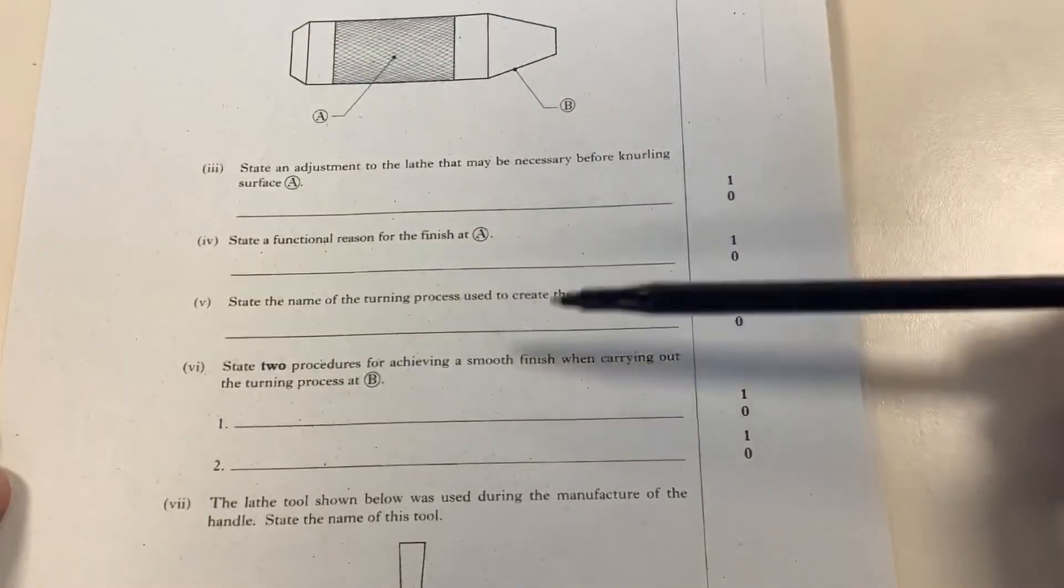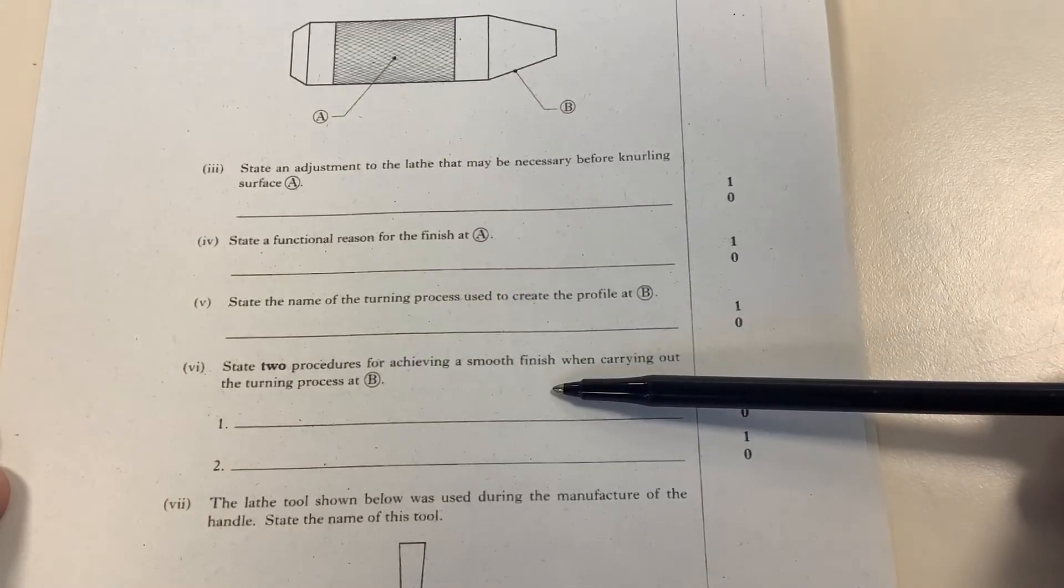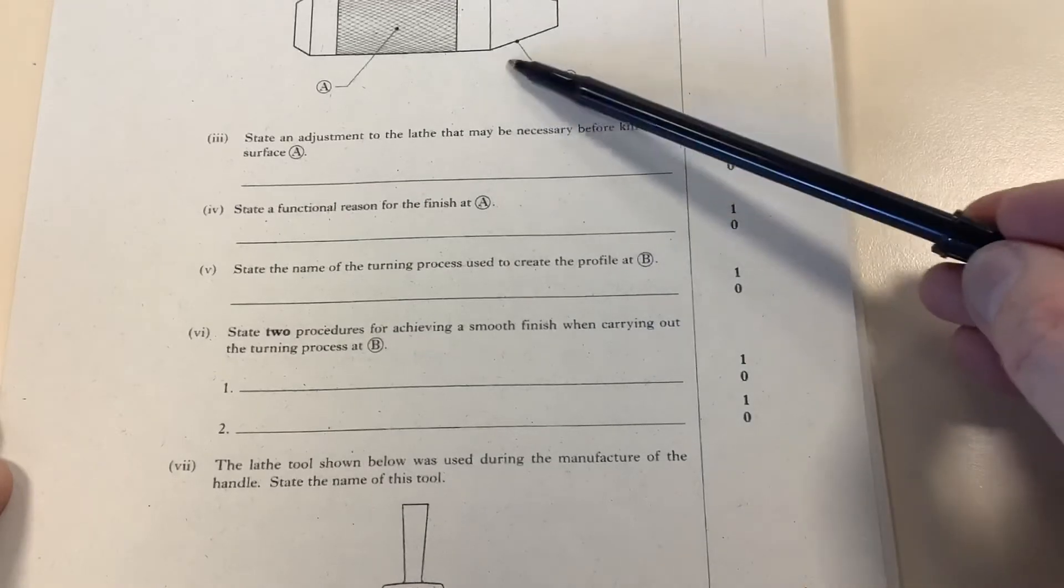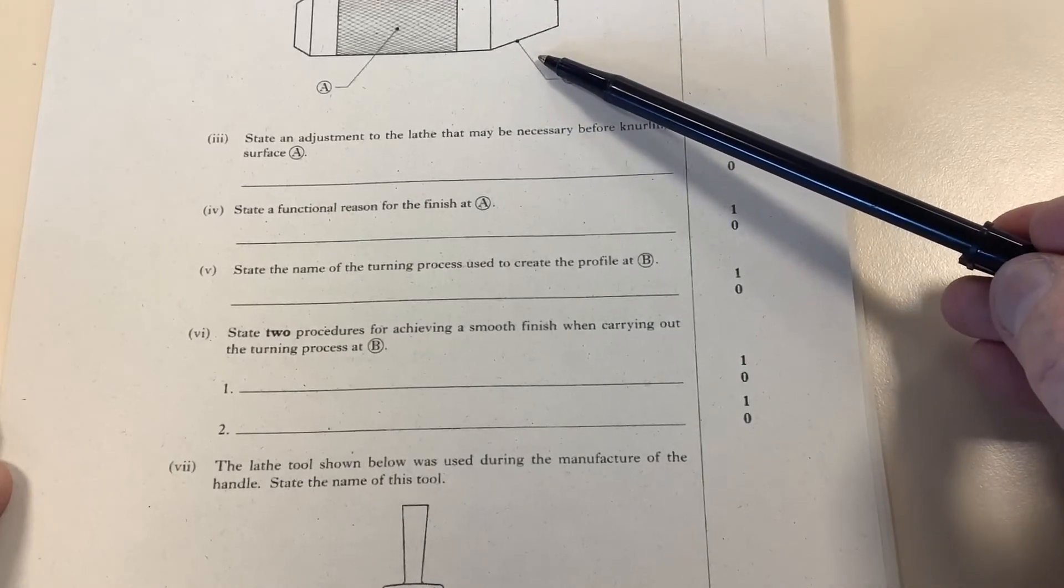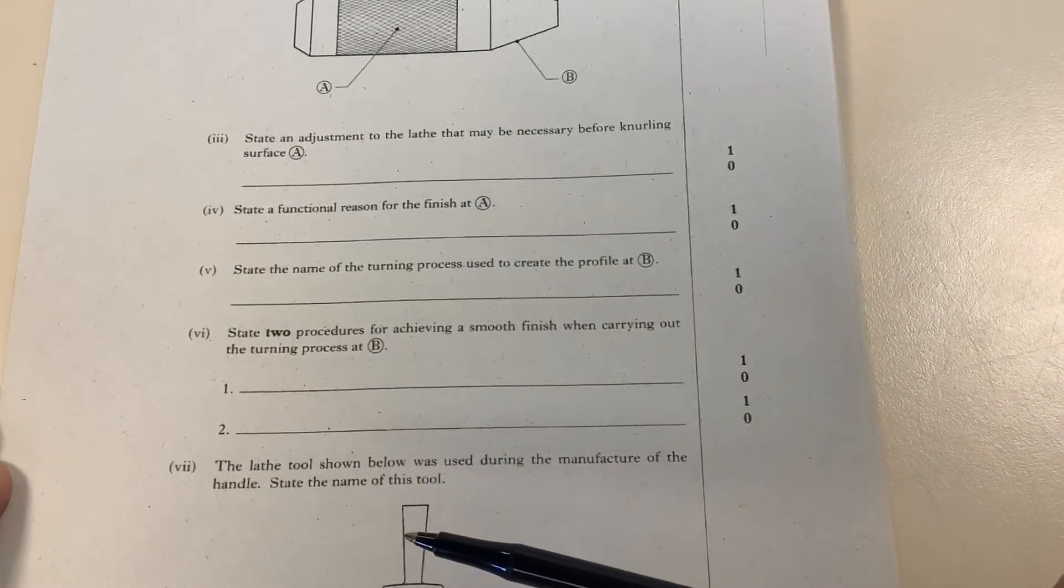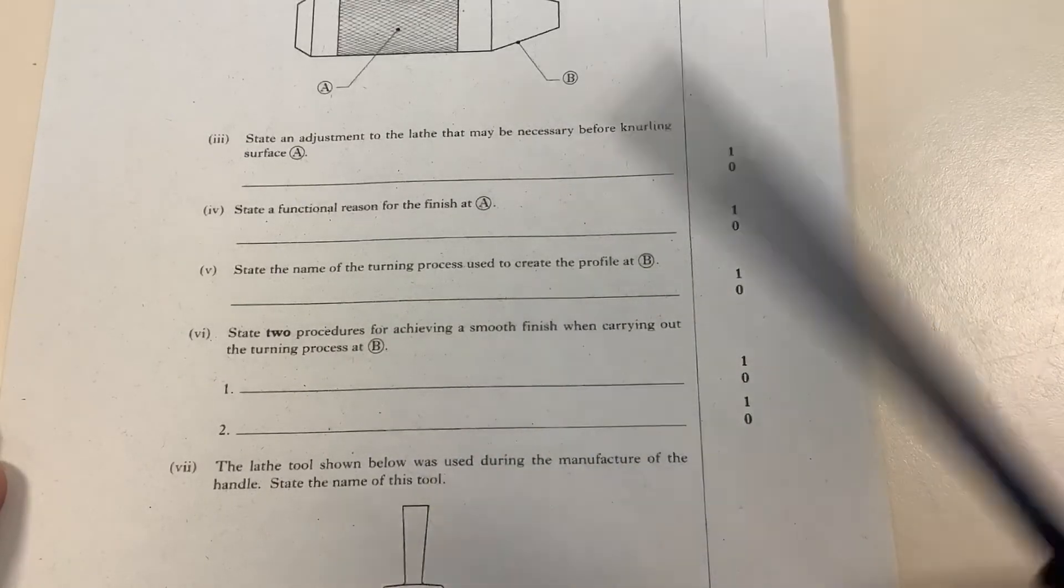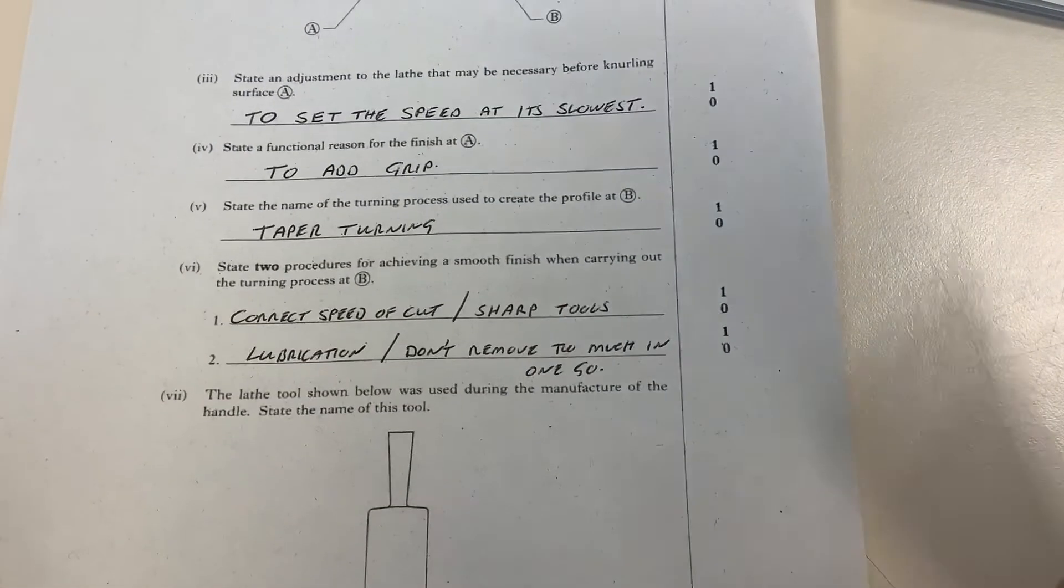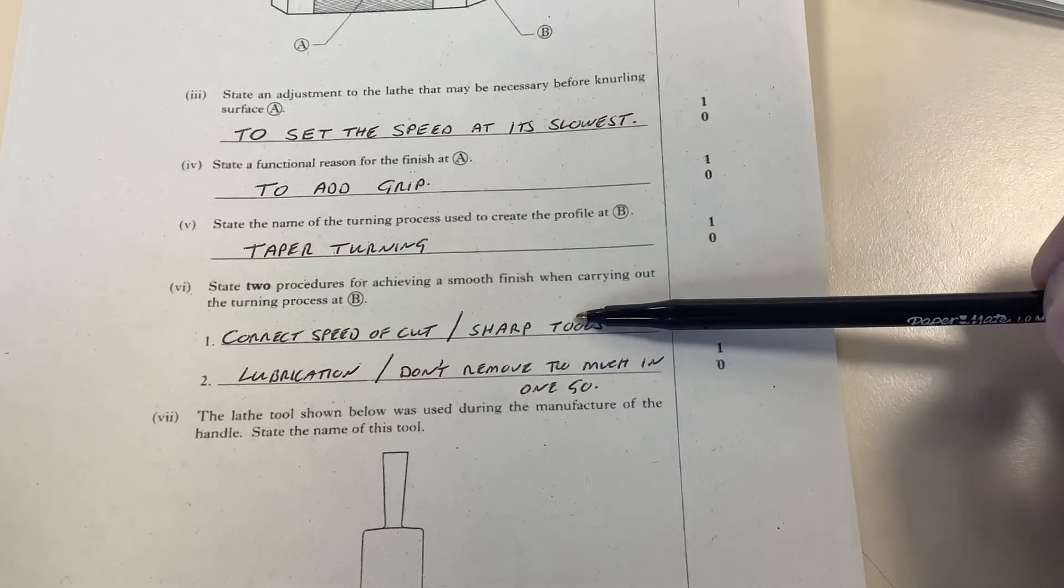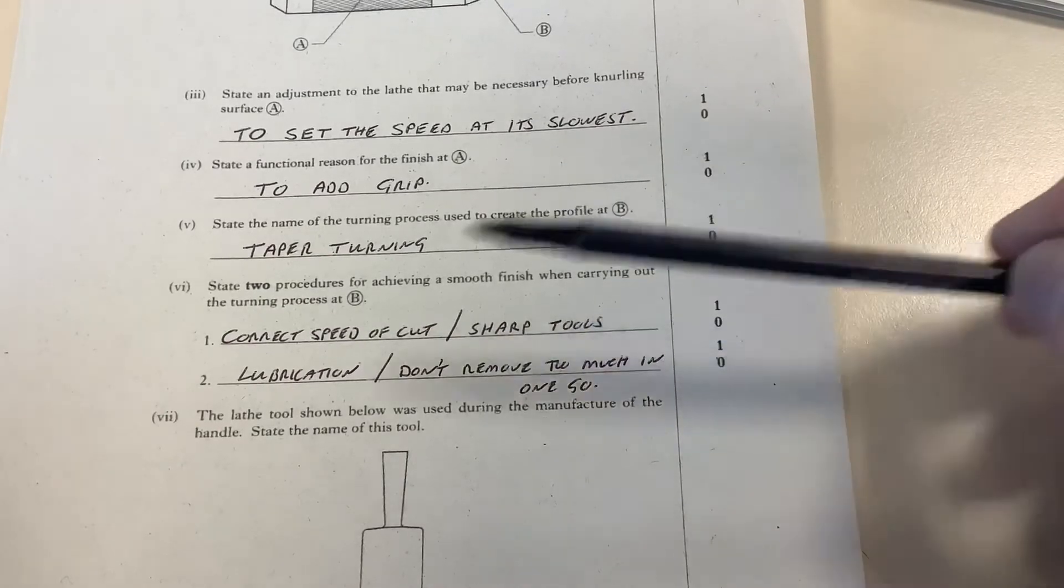State the procedure for achieving a smooth finish when carrying out either of these operations. Now it's two marks, so looking for two things. You have a choice; I'll give you the answer here. We're looking at having the correct speed of cut—very important—having sharp tools, using some lubrication if required.